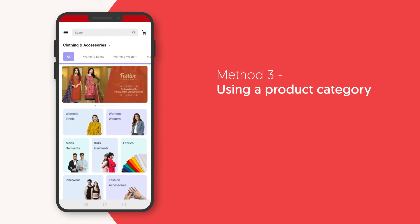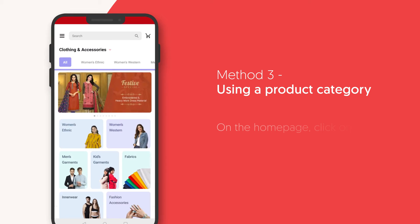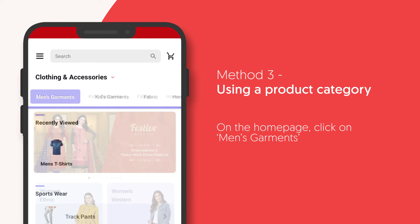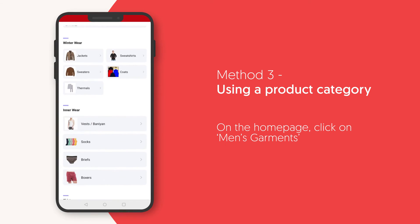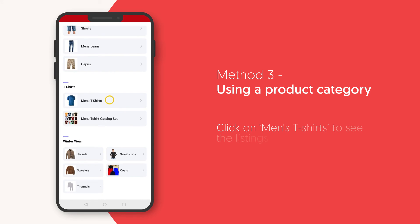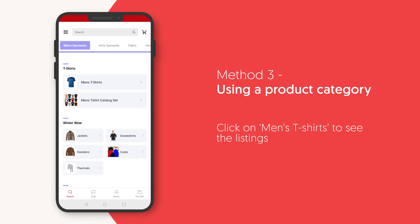Method 3: Using a product category. Let's take the example of browsing for a t-shirt. On the home page of the app, you will find different categories of products. Click on men's garments. This will show you all the products and types related to men's garments. Click on t-shirts from the listing and this will show you two options to choose from. Now click on men's t-shirts.